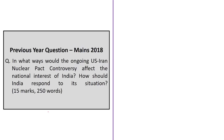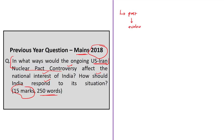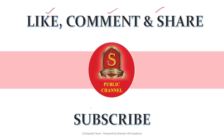Now look at this mains question which was asked in UPSC mains 2018 examination: In what ways would the ongoing US-Iran nuclear pact controversy affect the national interest of India? How should India respond to this situation? This is a 15-marks question and you have to write in 250 words. You can post your written answer in the comment section, and posted answers would be evaluated with suitable feedback given in a reasonable time frame. With this, we have come to the end of today's Hindu News Analysis. If you like the video, please do like, share, comment, and subscribe to the Shankar IAS Academy YouTube channel for more updates. Thank you.